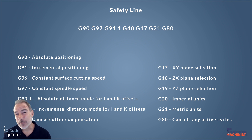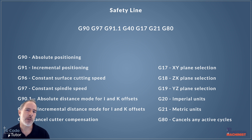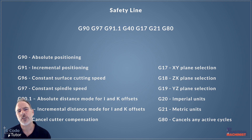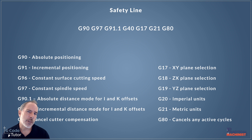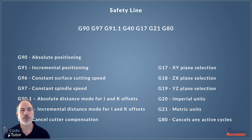This can save a lot of problems when jumping in and out of the program running different parts. If we only have this at the beginning of the program we would have to run through the entire program each time we want to test a certain part. So by putting a safety line in every block of code after each tool change, we always know the machine is in a default state and we can just pop in and run that tool with no problems.